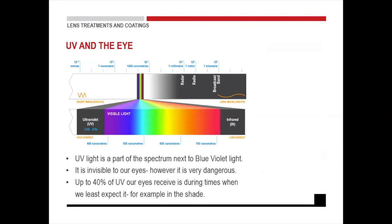The next thing I want to discuss is UV. There is so much to say about UV protection and blue control — that's a whole webinar on its own. UV is not good for your eyes. If you look at the spectrum, on the left-hand side we've got our UV wavelengths at about 400 nanometers. The shorter the wavelength, the quicker it resonates and the more harm it causes. UV goes into your visible light, which starts with blue and purple, which are also not good for your eyes. Then you go into blue, turquoise, green, yellow, orange, and then red and infrared on the other side.